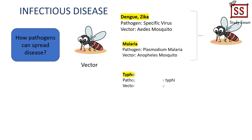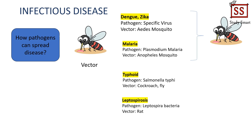Cockroaches and flies can cause typhoid disease. Rats transmit Leptospira bacteria, which can cause leptospirosis. Flies can also transmit Vibrio cholerae bacteria, leading to cholera disease.